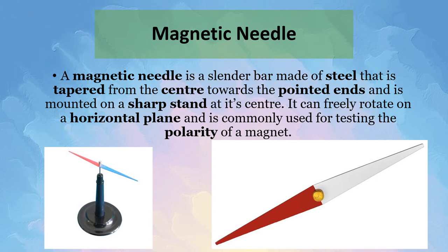Now let's look at magnetic needles. A magnetic needle is a slender bar made of steel that is tapered from the center towards the pointed ends and is mounted on a sharp stand at its center. It can freely rotate on a horizontal plane and is commonly used for testing the polarity of a magnet. Magnetic polarity refers to the orientation of these poles in space. A magnetic needle is commonly used for magnetic compasses.